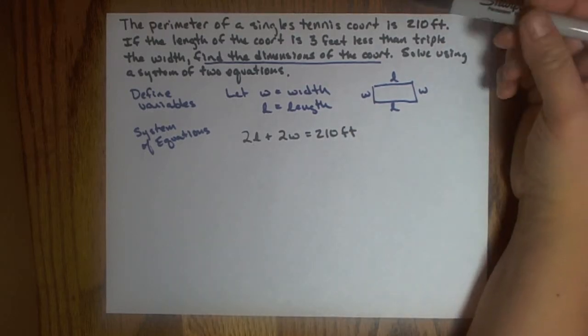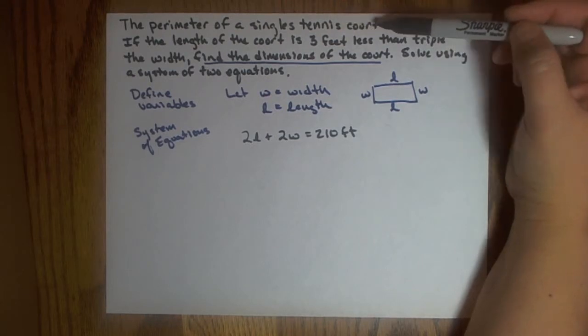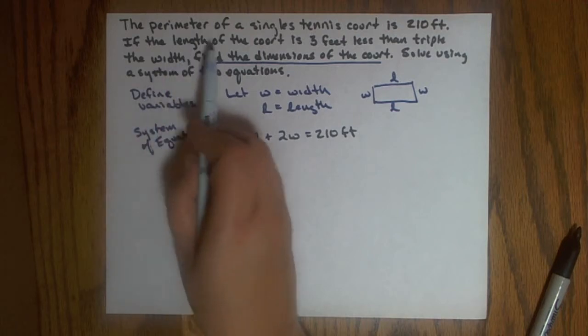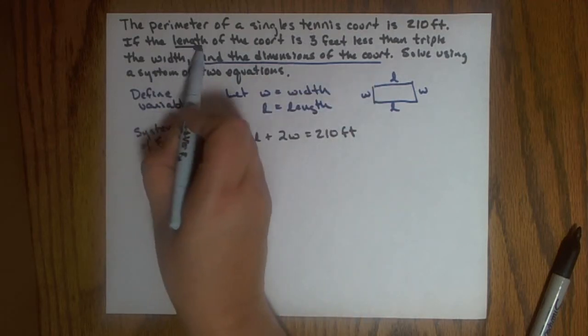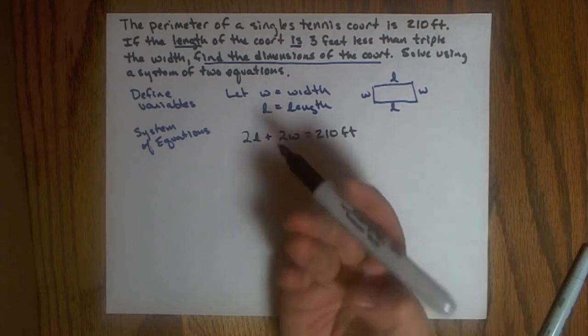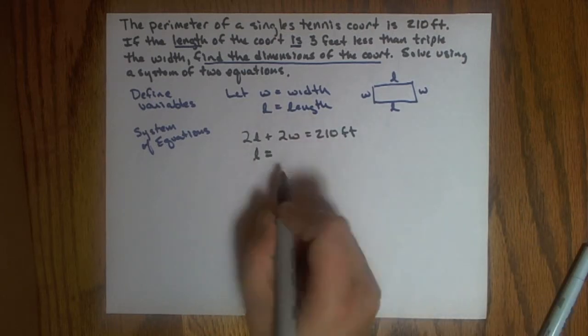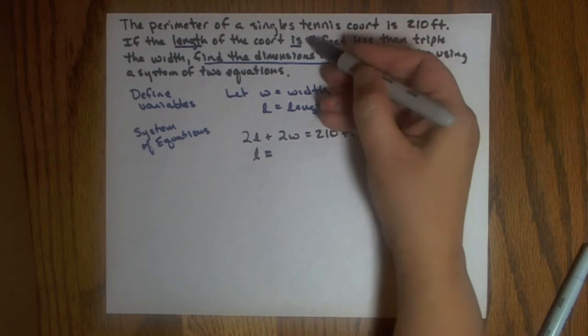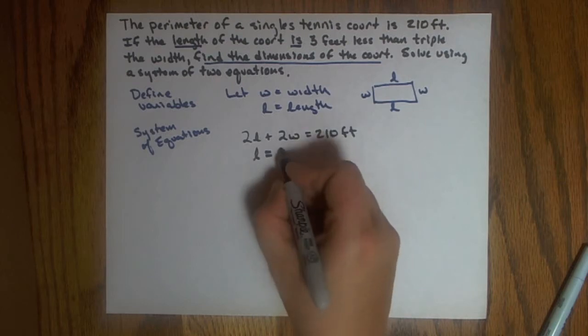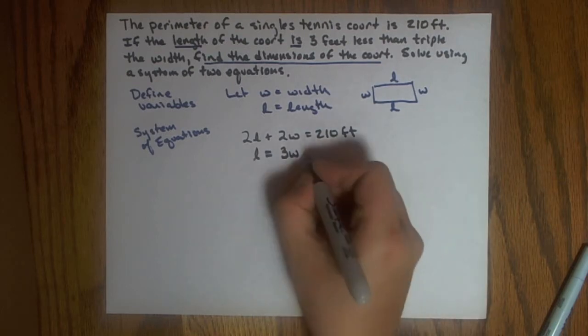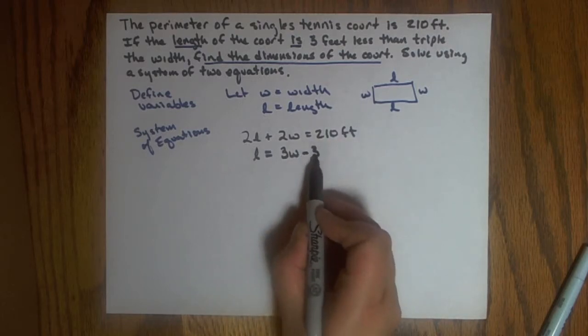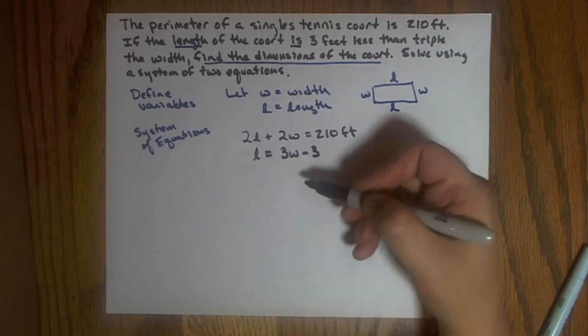To find my second equation, I read on, and it says the length of the court is three feet less than triple the width. So I don't know anything about the width, but I know the length in comparison to the width. So I know that the length of the court is three feet less. So that will help me set up my second equation. The length is, remember the equal sign often goes in place of the is in the sentence, three feet less than triple the width. I know triple the width is like three times the width, and three feet less would be subtracting three from that amount. Remember, when you say three feet less, it's always subtracting three at the end. Less thans come at the end of the problem.